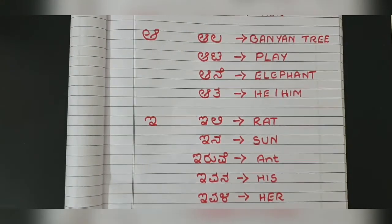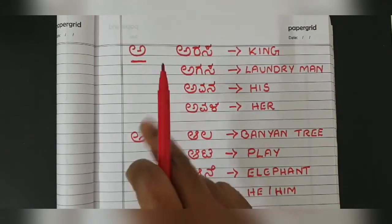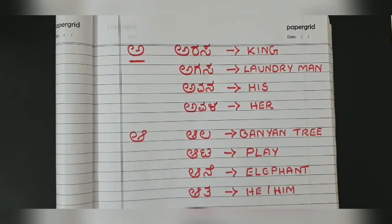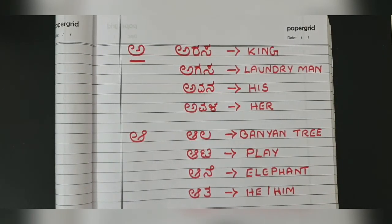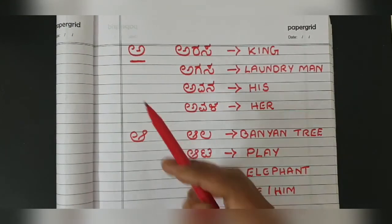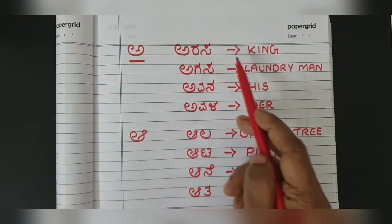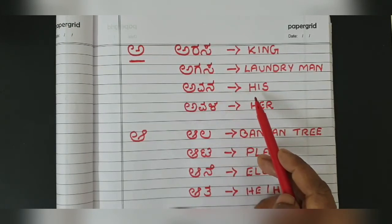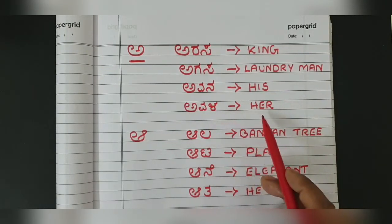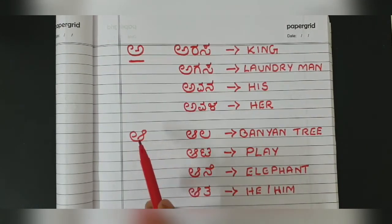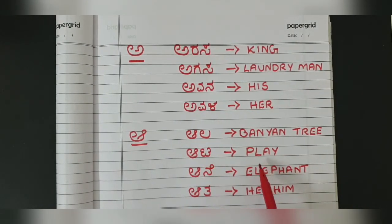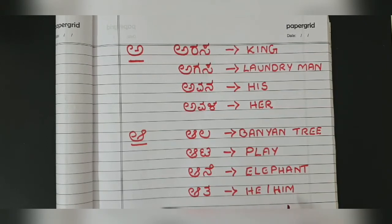Let's count all the words we've learned today — 1, 2, 3, 4, 5, 6, 7, 8, 9, 10, 11, 12, 13 words. That's more than enough for today. Let's recap from A: arasa means king, agasa means laundryman, avana means his, avala means her. Then āla means banyan tree, āta means play, āne means elephant, āta means he or him.